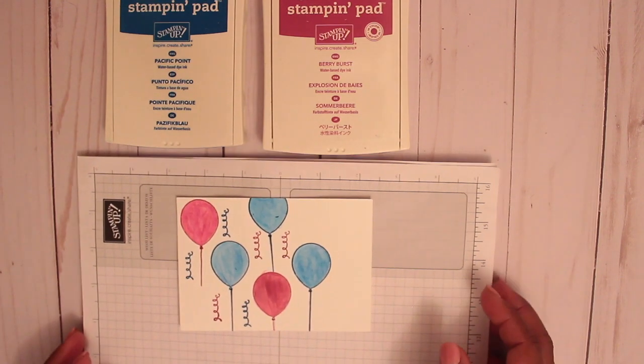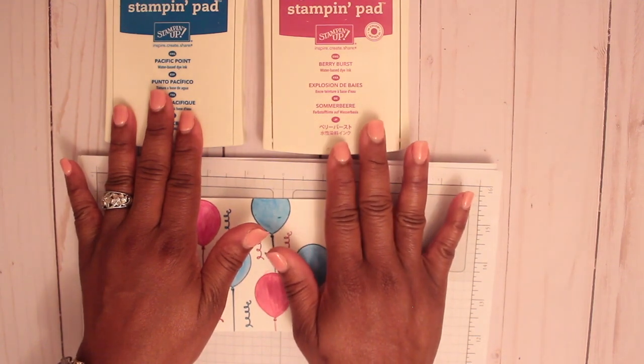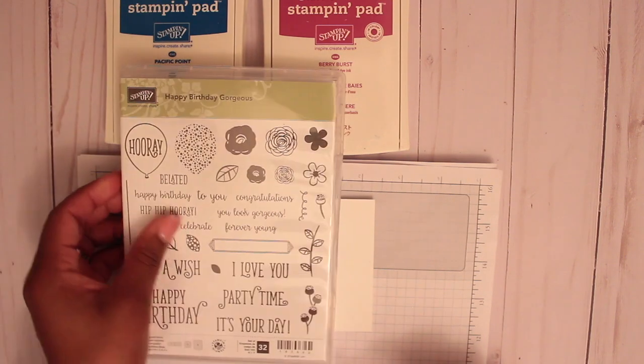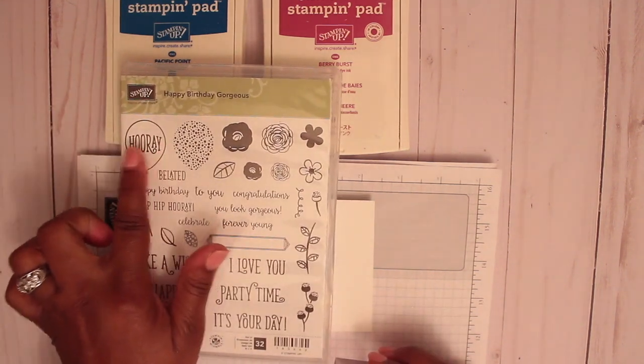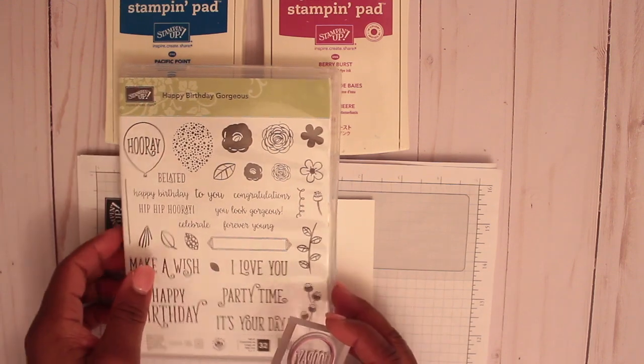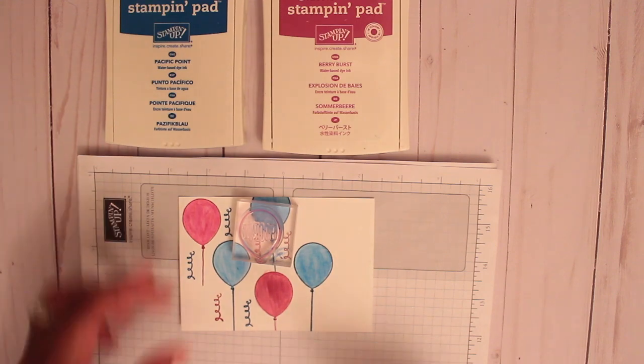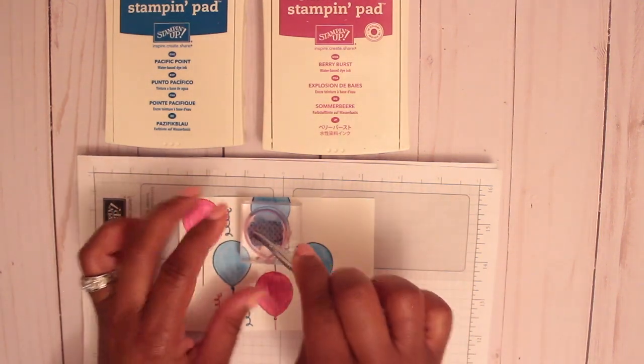The colors that I'm going to be using are Pacific Point and Berry Burst. In the Happy Birthday Gorgeous stamp set on the balloon it has this writing in the middle saying hooray. I'm going to use a piece of washi tape and cover up that area because I just want the outline of the balloons.